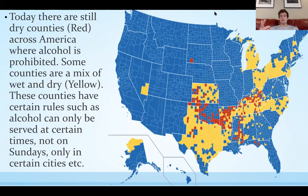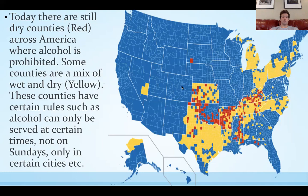Surprisingly, even today there are still dry counties — listed here in red — where alcohol sale is prohibited in some way, shape, or form. You see definitely across the South there's a heavy presence of dry counties. There are also mixed counties in yellow, across the South and even up in the Midwest, where there are certain rules like alcohol can only be served at certain times, not on Sundays, and so on. A lot of this is carryover from older traditional, conservative values.